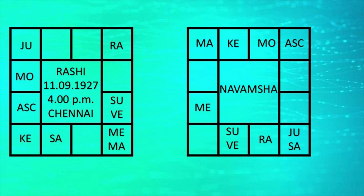I say there is no own house or exaltation status in Navamsha — I will explain this concept in another video. Moon is in the house of Venus, which is a natural benefic. This person has a good planetary position of all the planets in Navamsha as well as the Rashi chart.